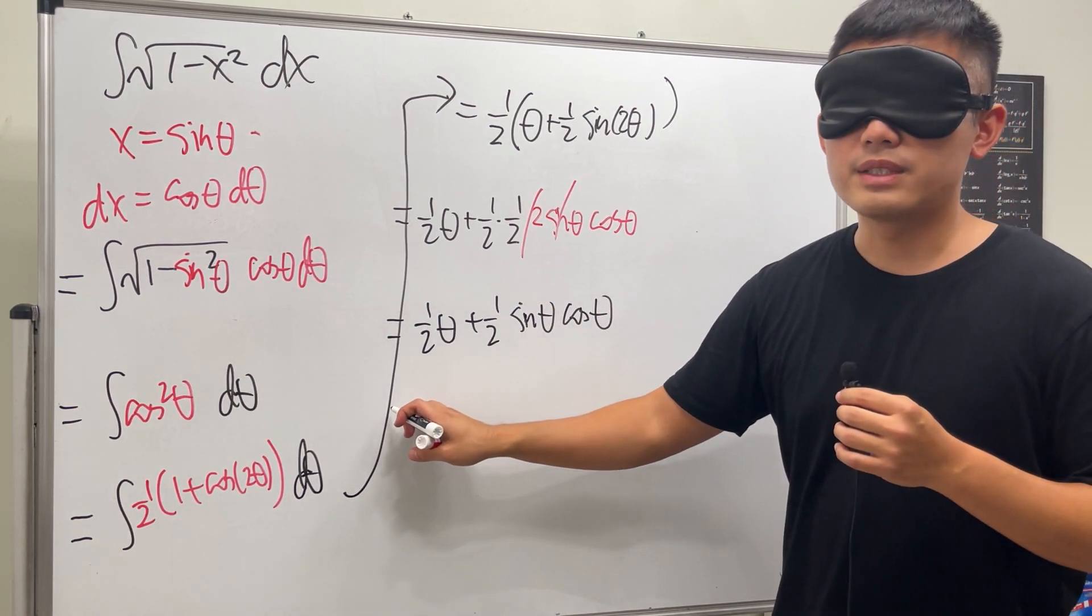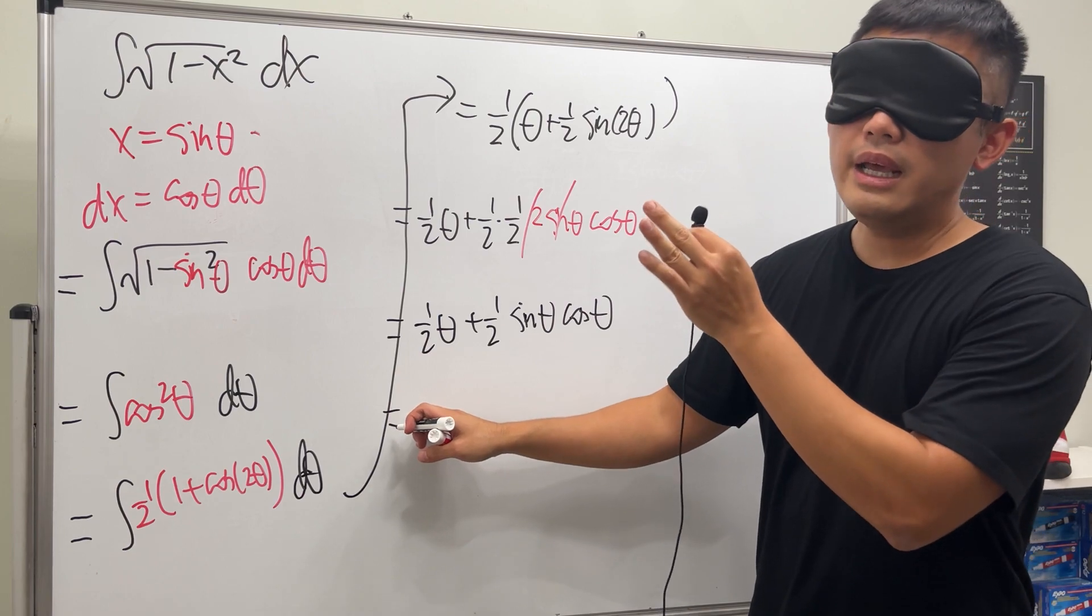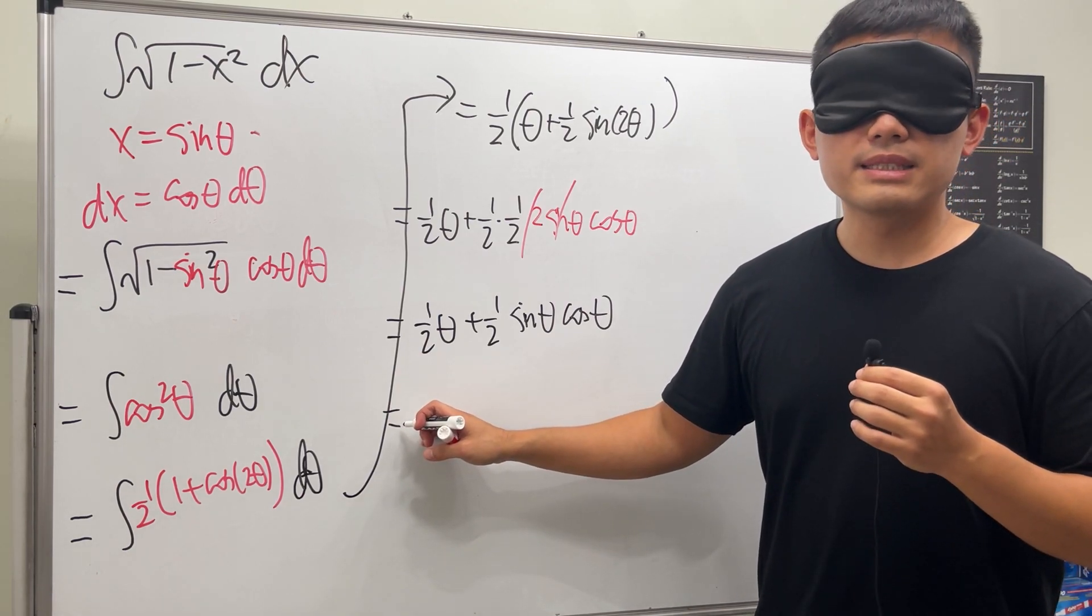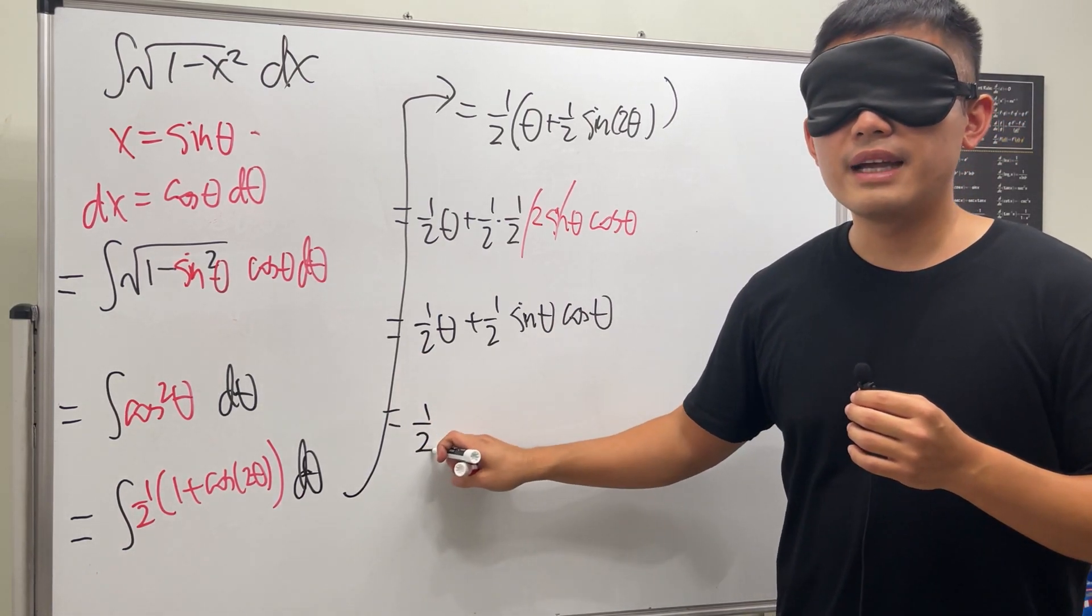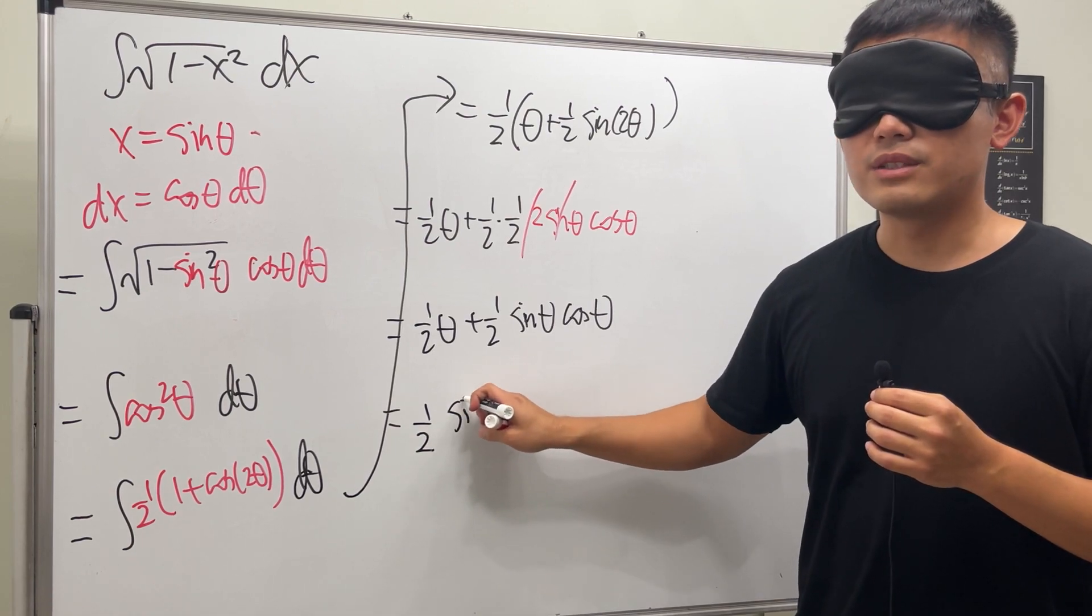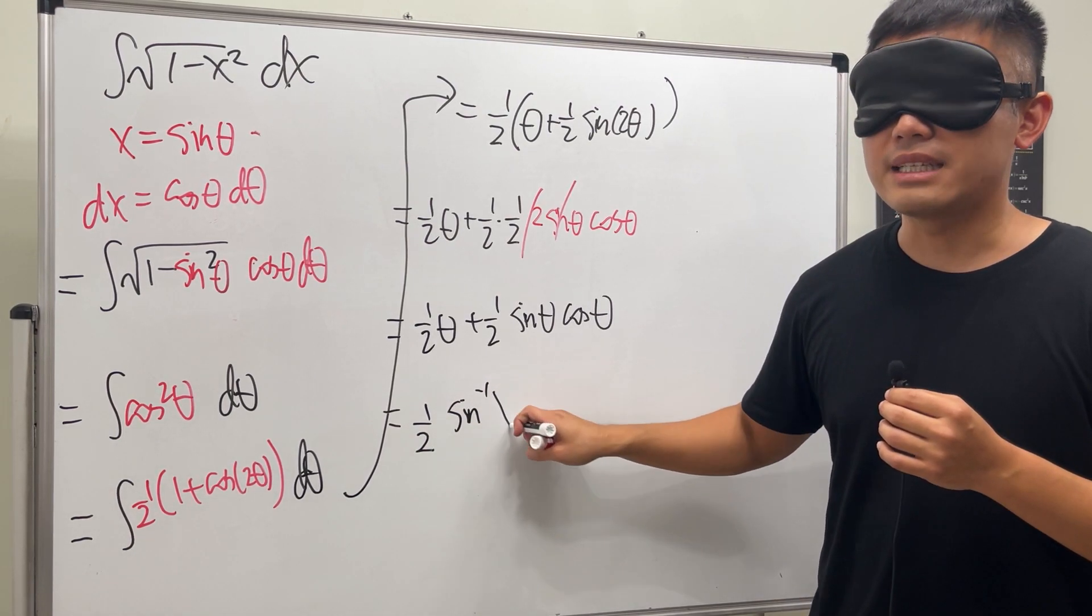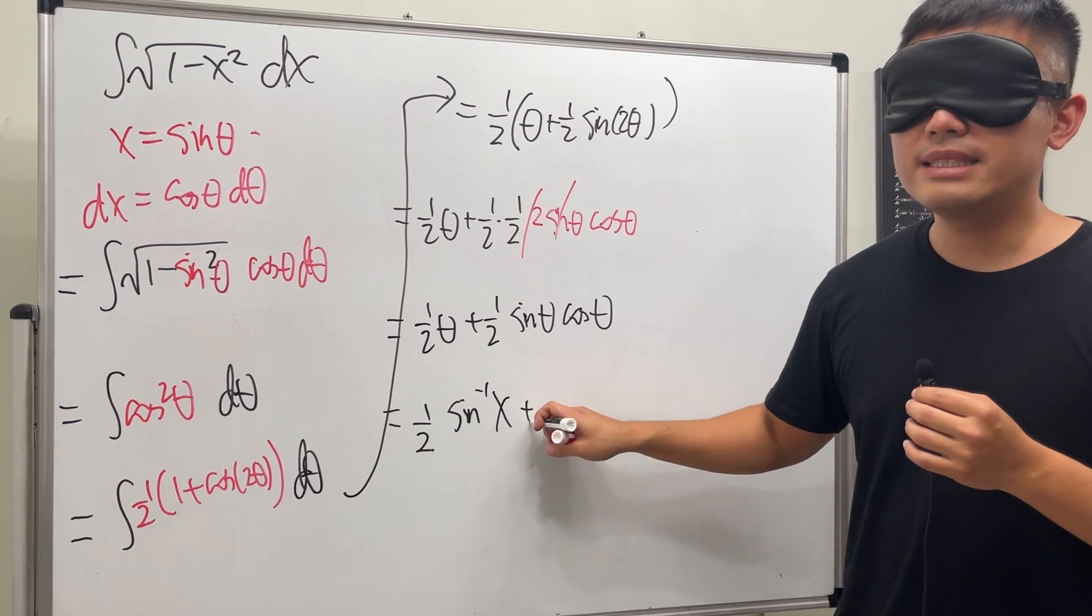And now we just have to go back to the x world. X is equal to sine theta, so theta is equal to inverse sine. So one half inverse sine x, and then we add one half